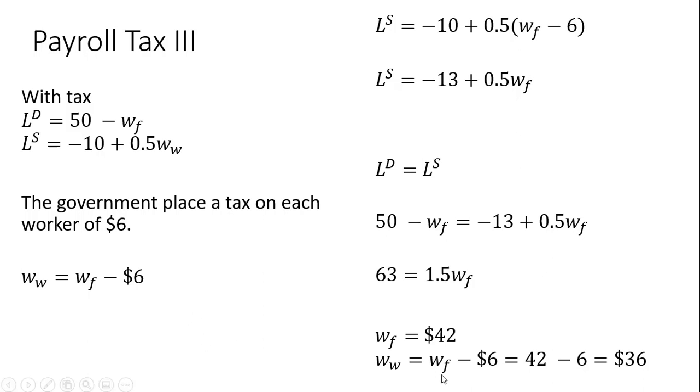As far as workers are concerned, they get this $42 from the firm, but they have to write the check to the government for $6, leaving workers on an after-tax basis with $36. Okay, that's it. I hope you found this video helpful.